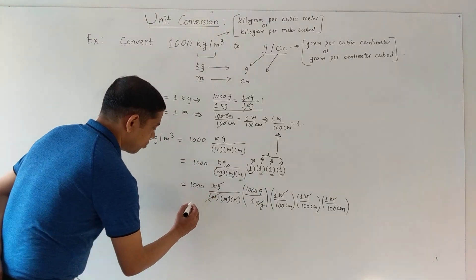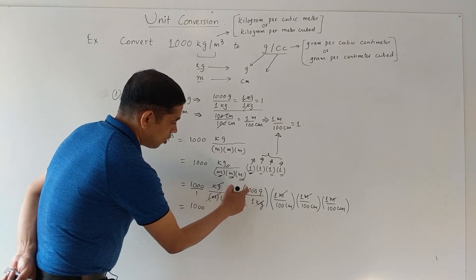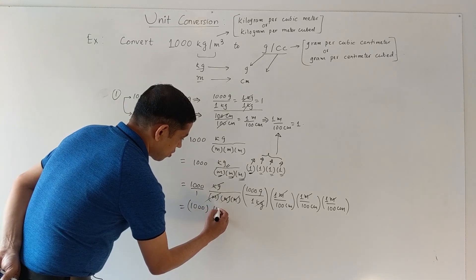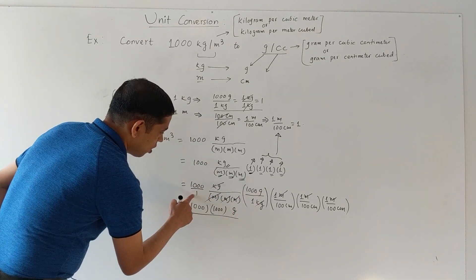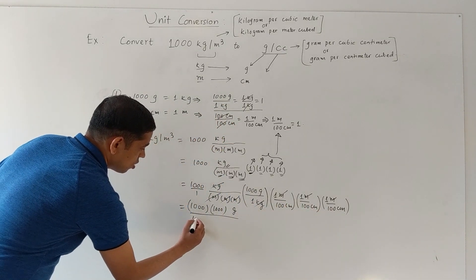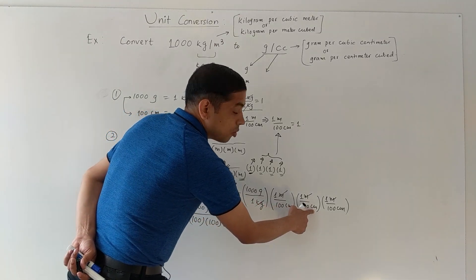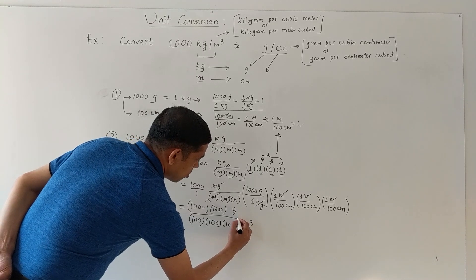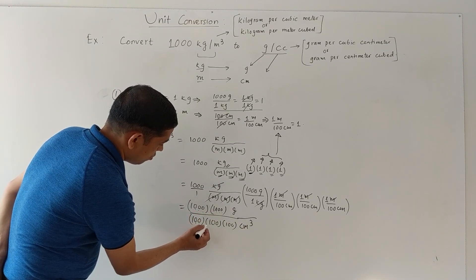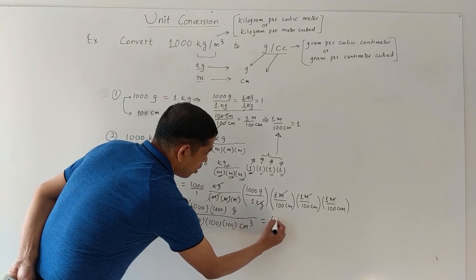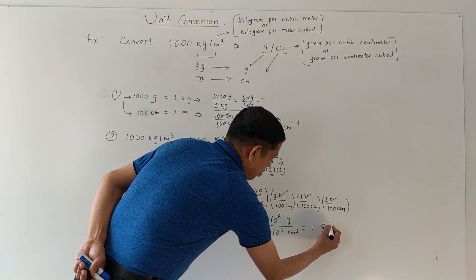What are we left with? We have 1000 times 1000 on the top, which gives us gram. On the bottom we have 1 times 1 times 100 times 100 times 100, which is 100 cubed. We have centimeter cubed on the bottom. The 10 to the 6 on top and 10 to the 6 on the bottom cancel each other, giving us 1 gram per cc.